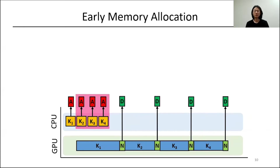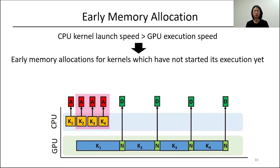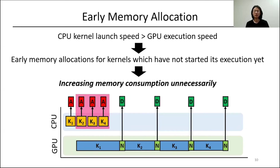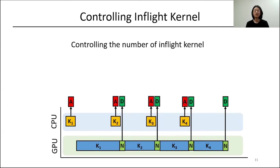However, this on-time deallocation incurs the subsequent issue of early allocation. If the CPU runs faster than GPU execution speed, it will pre-allocate memory for kernels that have already been launched by the CPU but have not yet started execution on the GPU. This unnecessarily increases memory consumption. To mitigate this problem, the memory manager in ZICO simply controls the number of in-flight kernels so that early allocation can be prevented.